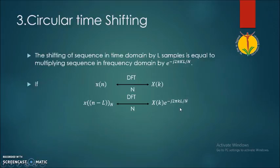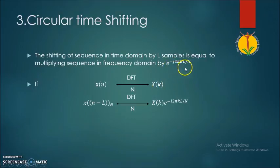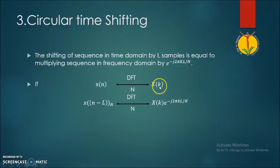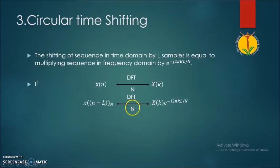The third property is the circular time shifting property. The shifting of a sequence in the time domain by l samples is equivalent to multiplying the sequence in the frequency domain by e raised to minus j2πkl divided by N. So if x(n) is a sequence with DFT X(k), shifting x(n) by l samples gives a DFT equal to X(k) multiplied by e raised to minus j2πkl divided by N.